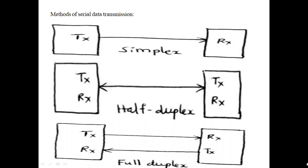The third method is full duplex. In this mode, the data is transmitted from transmitter to receiver and from receiver to transmitter at the same time — both directions simultaneously. An example is a mobile phone.